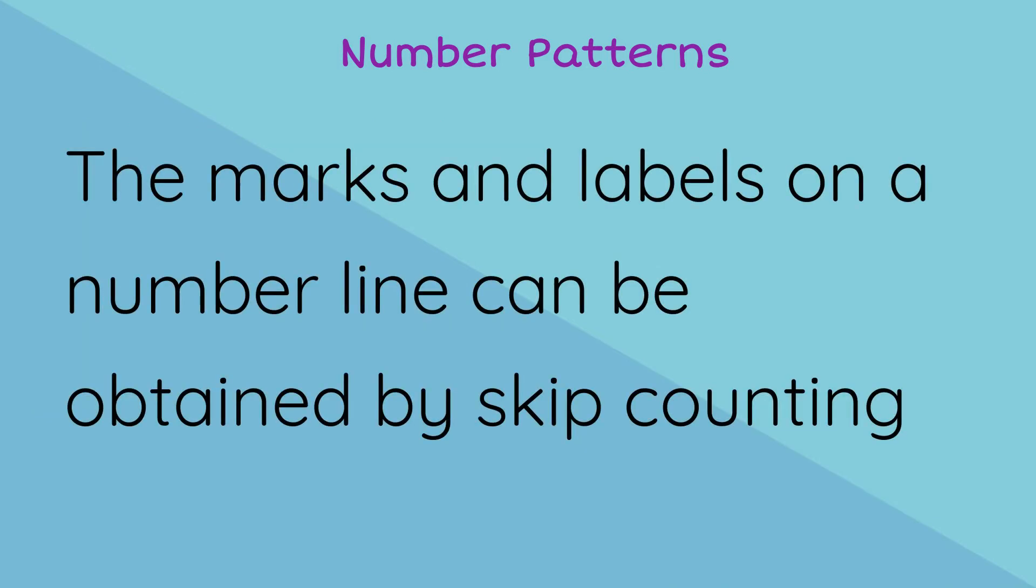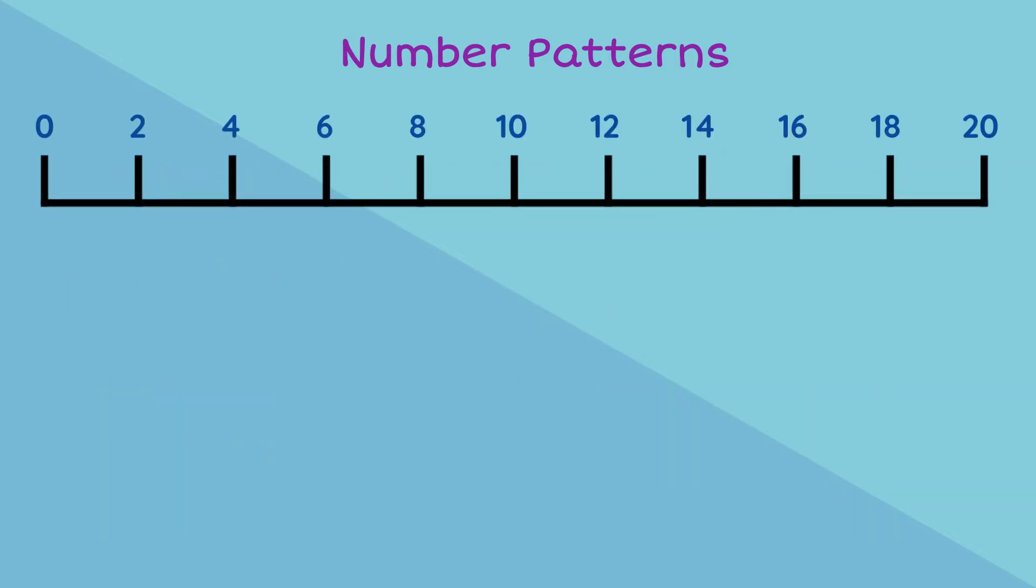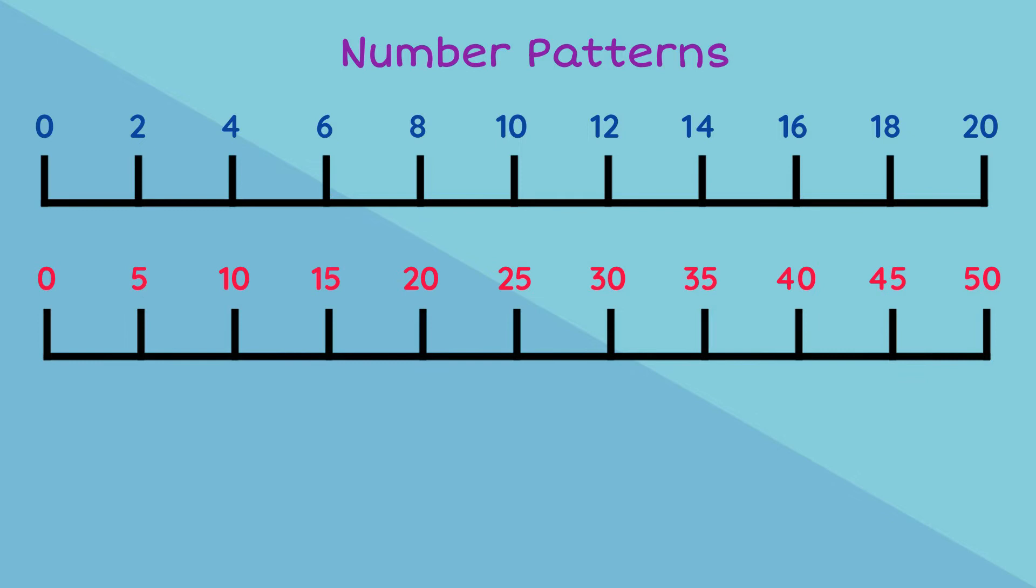For example, the marks and labels on a number line can be obtained by skip counting. Common intervals are 2, 5, or 10.